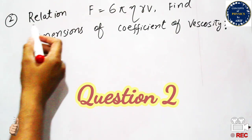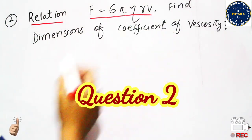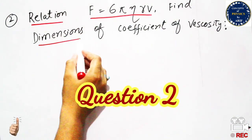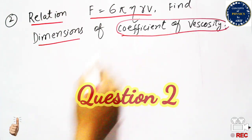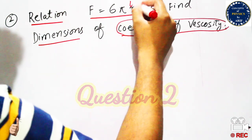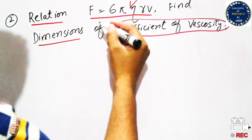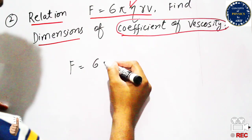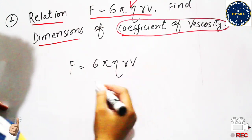The next question is to find the dimension of the coefficient of viscosity using the relation F equals 6π·η·r·v. Here, F is the drag force and η is the coefficient of viscosity. From this expression we need to calculate the value of eta.